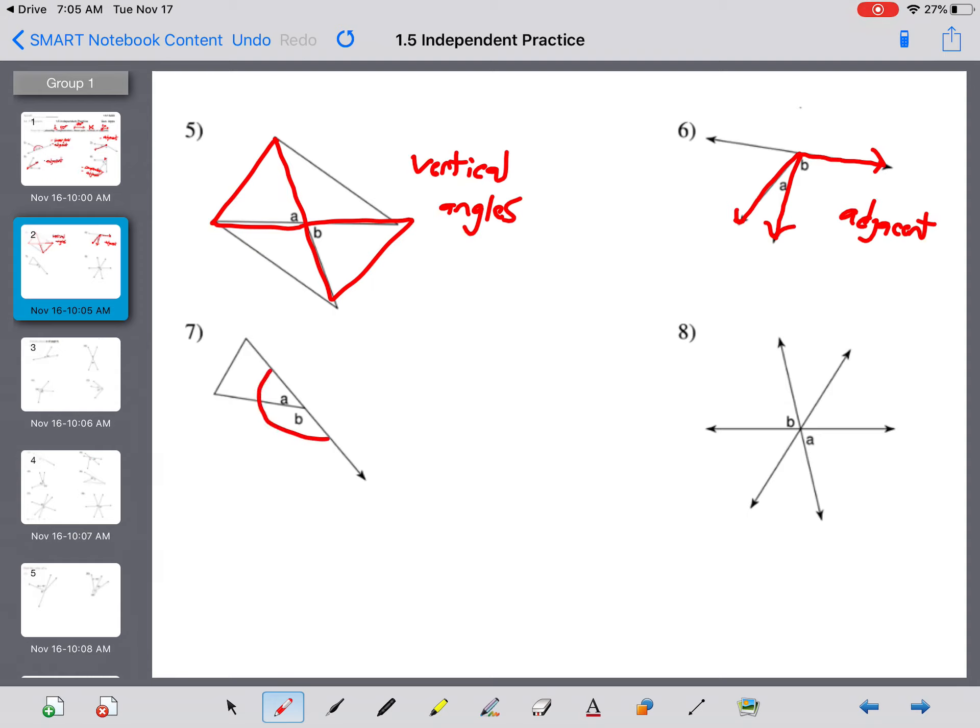A and B here, though, do make that straight line. So that's a linear pair. As well as adjacent. And last, again, you have A and B. Two straight lines. Make that bow tie shape. These are vertical.